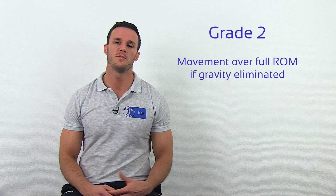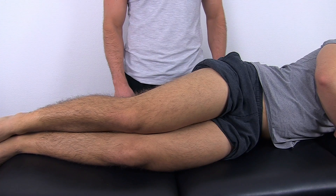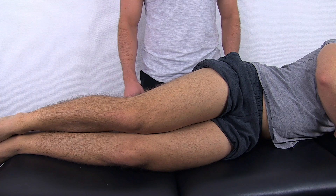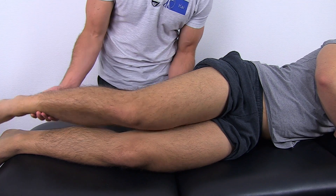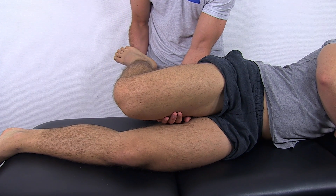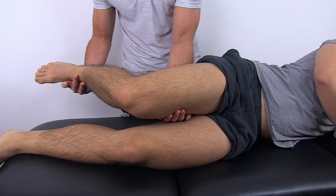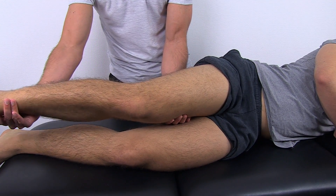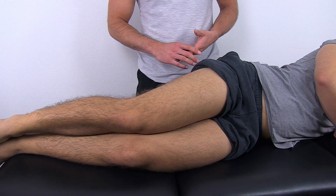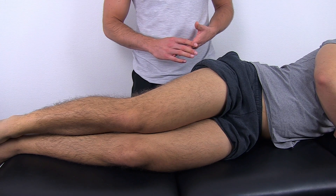Grade 2: movement over full range of motion can only occur if gravity is eliminated. In order to distinguish between grade 1 and 2, we have to bring our patient into a sideline position to eliminate gravity. Then I will support the leg of my patient, bring it into full flexion, and ask my patient to move into extension. If my patient is able to move through the full range of motion, this is a grade 2. If no movement is possible at all, we are talking about grade 1.